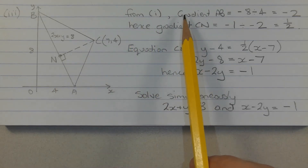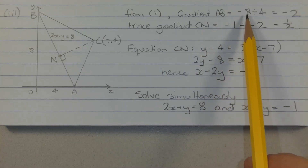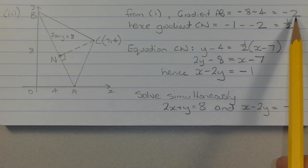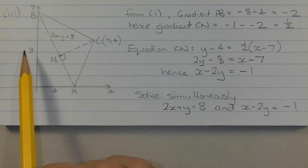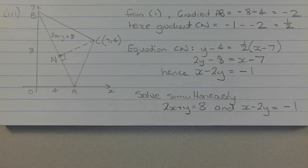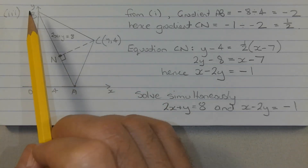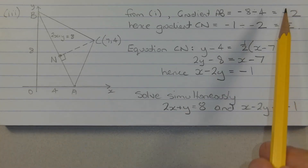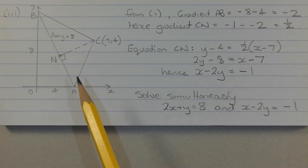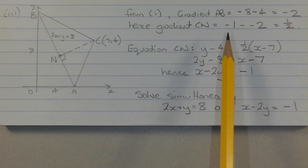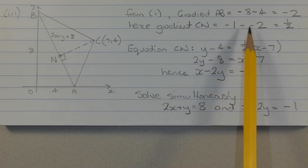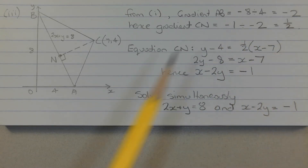From Part 1, the gradient of AB equals negative 8 divided by 4, which equals negative 2. The distance from the origin to point A is 4 units, and the distance from the origin to point B is 8 units — it's a fall, so it's a negative gradient: rise over run gives negative 8 divided by 4, which is negative 2. Since CN is perpendicular to AB, the gradient of CN is the negative reciprocal of negative 2, which gives us 1 over 2.